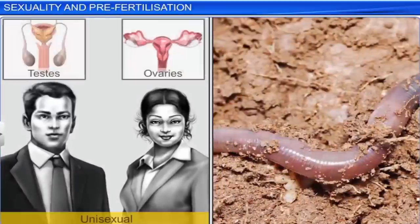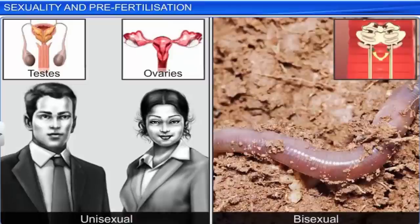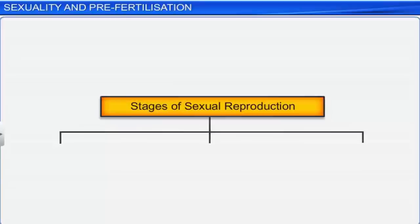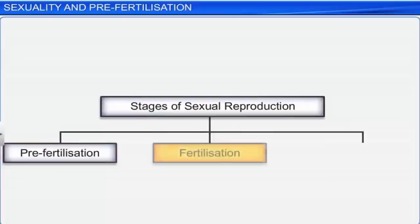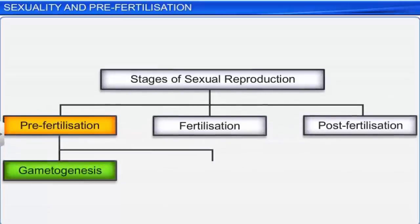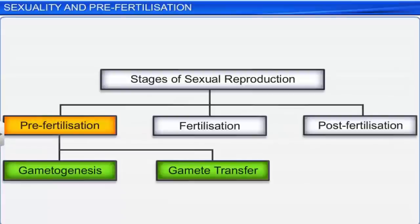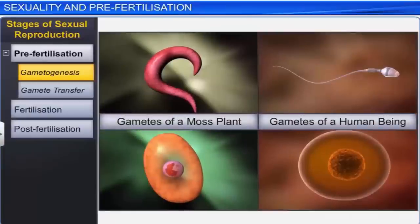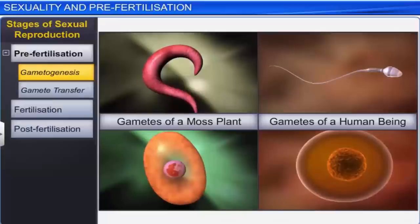Regardless of whether organisms are unisexual or bisexual, reproductive structures play an important role in sexual reproduction — a process divided into three distinct stages: the pre-fertilization, fertilization, and post-fertilization stage. The pre-fertilization stage is the first stage in sexual reproduction and includes gametogenesis and gamete transfer — events that occur prior to the fusion of gametes. Gametogenesis refers to the process of formation of the haploid male and female gametes due to cell division in the parent body.